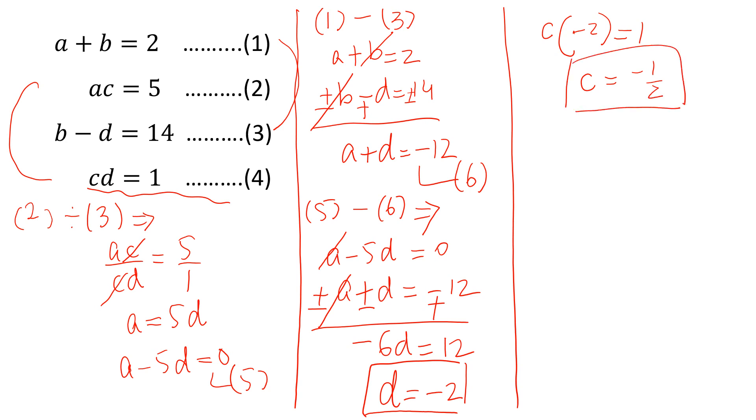Now put C in equation 2. A into minus 1 over 2 is equal to 5, and we will get A is equal to minus 10. This is the third value.